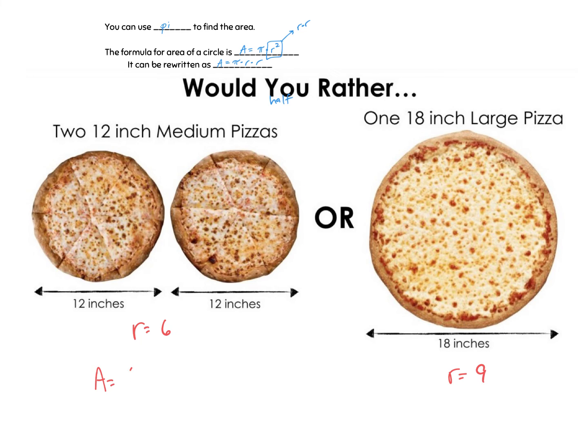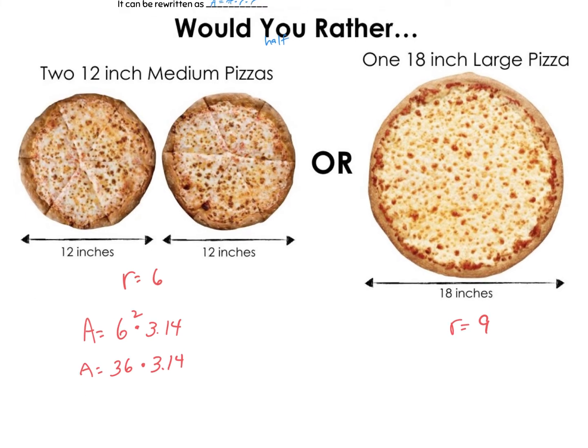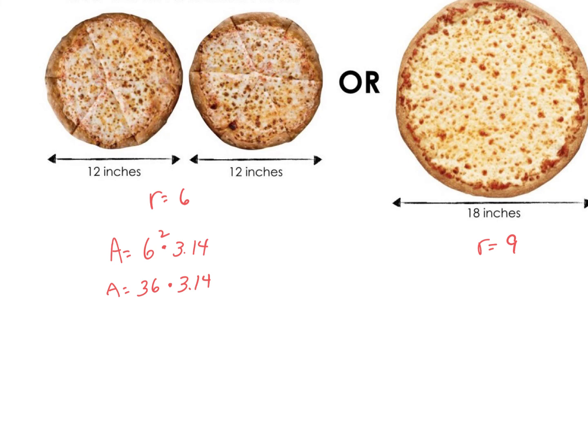If I calculate the area of the pizza for the 12 inch, I'm going to do 6 times 6 squared times 3.14. 6 squared is 36 times 3.14. And then that is 113.04. But we have two of those right? So I'm going to take that and multiply it by 2. And I get 226.08.